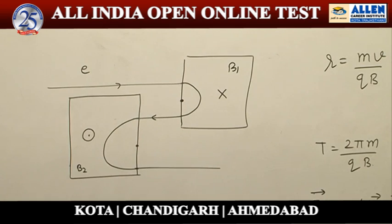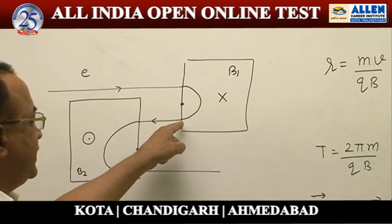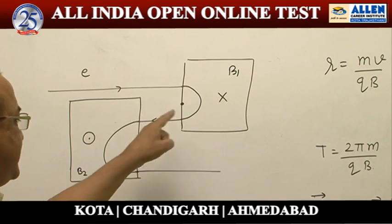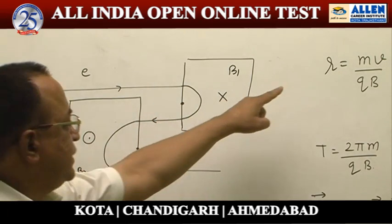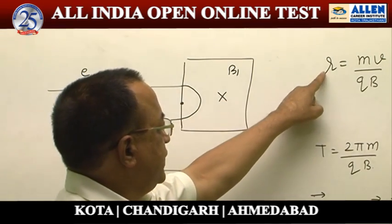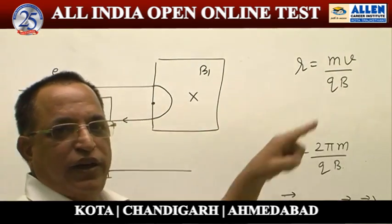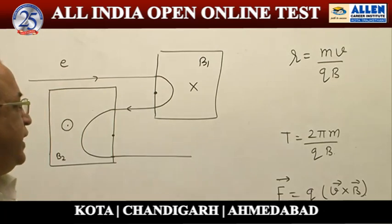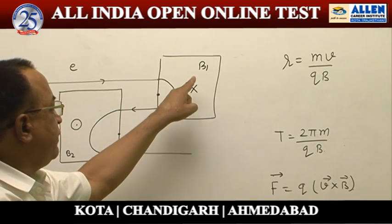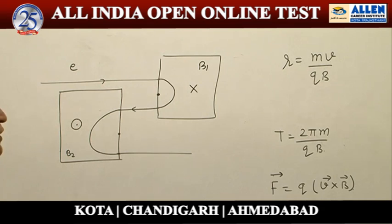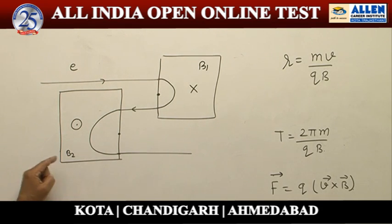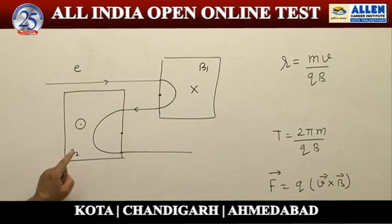We can see that this radius is less than the other radius. A smaller radius means a stronger magnetic field. So I can say that in this region, magnetic field B1 is greater in magnitude than in the other region.